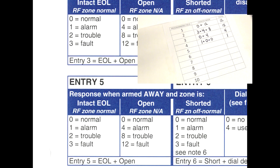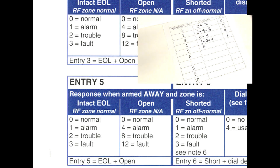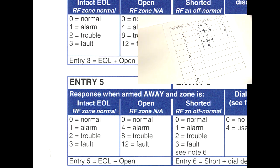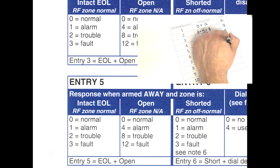Moving along to field five. Response when armed in away mode and zone is intact — that indicates everything is normal, so enter in a zero. Response when armed in away mode and zone is open — that should trigger an alarm, so enter in a four. Zero plus four equals four for the total column in programming field five.